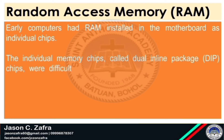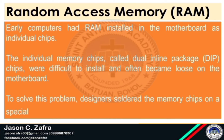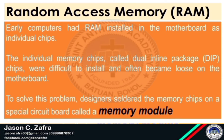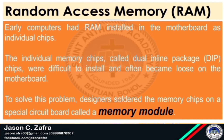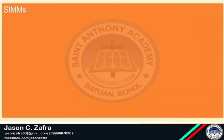Early computers had RAM installed in the motherboard as individual chips. The individual memory chips called Dual Inline Package or DIP chips were difficult to install and often became loose on the motherboard. To solve this problem, designers soldered the memory chips on a special circuit board called a Memory Module. Some types of memory modules include: Dual Inline Package (DIP), Single Inline Memory Module (SIMM), Dual Inline Memory Module (DIMM), RAM Boost Inline Memory Module (RIMM), and Small Outline Dual Inline Memory Module (SODIMM).